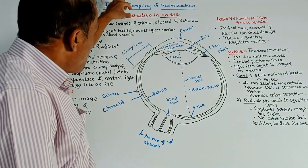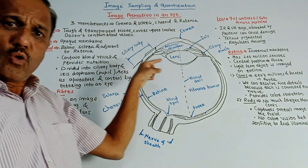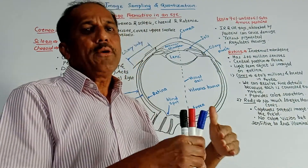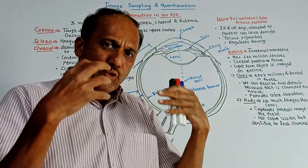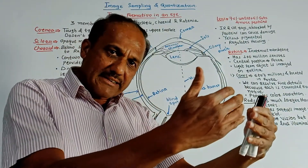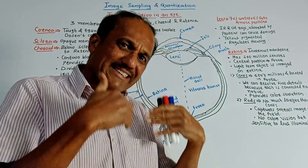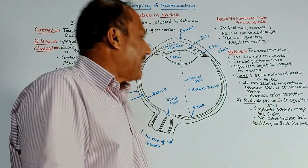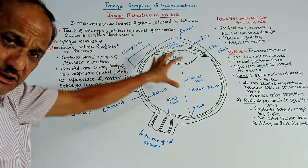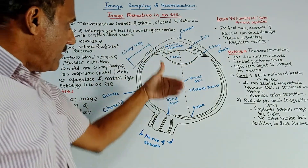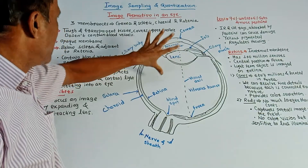Before this, we'll discuss image formation in an eye. This is the simplified horizontal cross-section of a human eye. We know that the eye captures an image — light is reflected from an object, the eye captures it, and the corresponding sensation is given to the brain. You may expect a question like: describe the functioning of the human receptor, which is an eye.